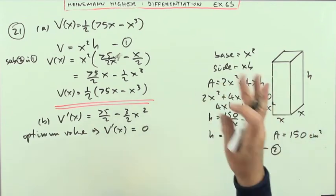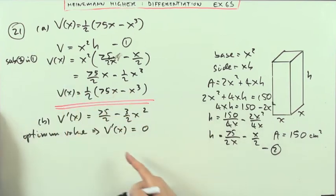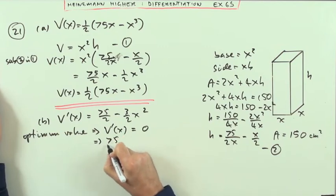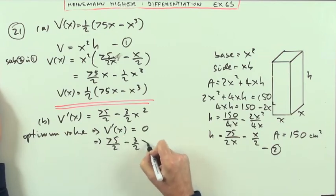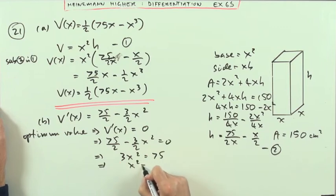Otherwise it just goes on forever, either up or down. You'll only get an optimum value if it's stationary somewhere. So I've got this part here to equal zero, which means that 75 upon 2 minus 3x squared should equal zero. I'll forget the twos, double everything. That means that 3x squared should equal 75. You can see the answer materializing. Should equal 25.